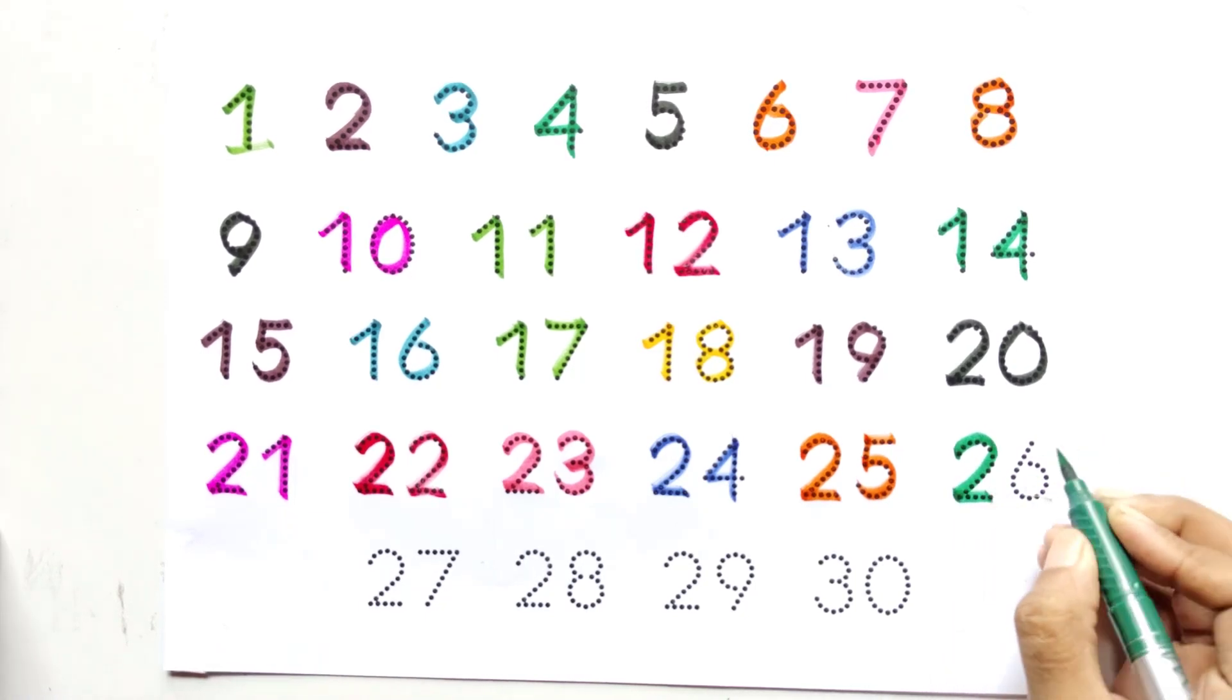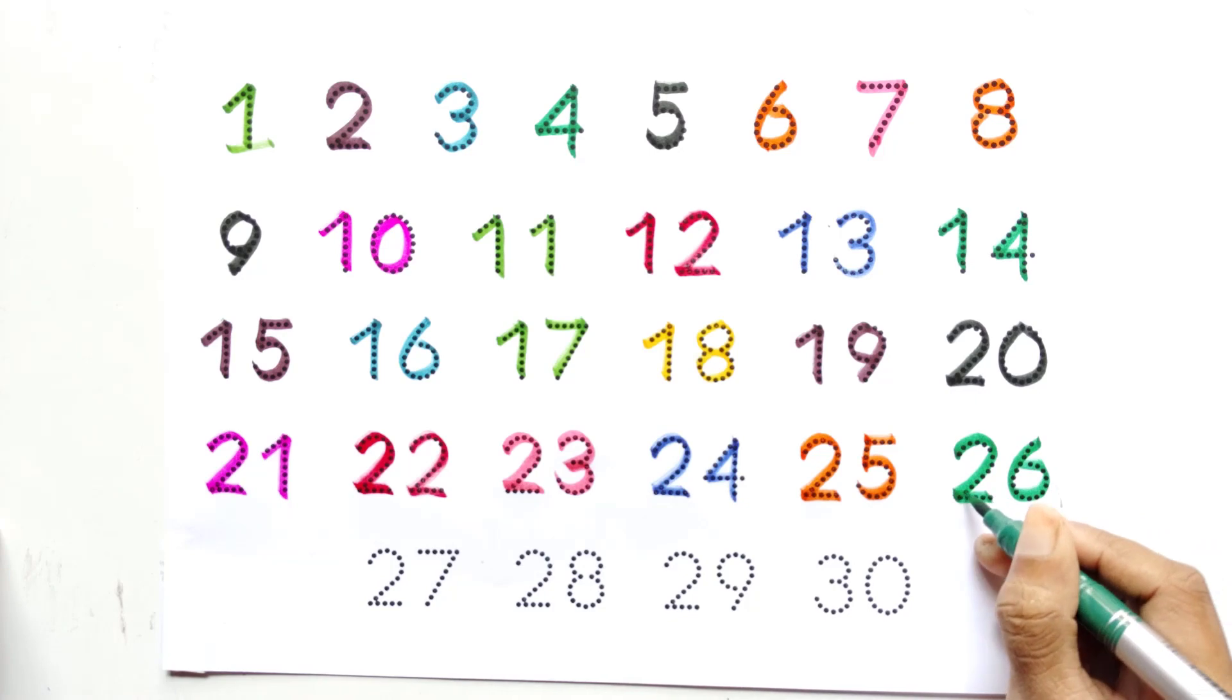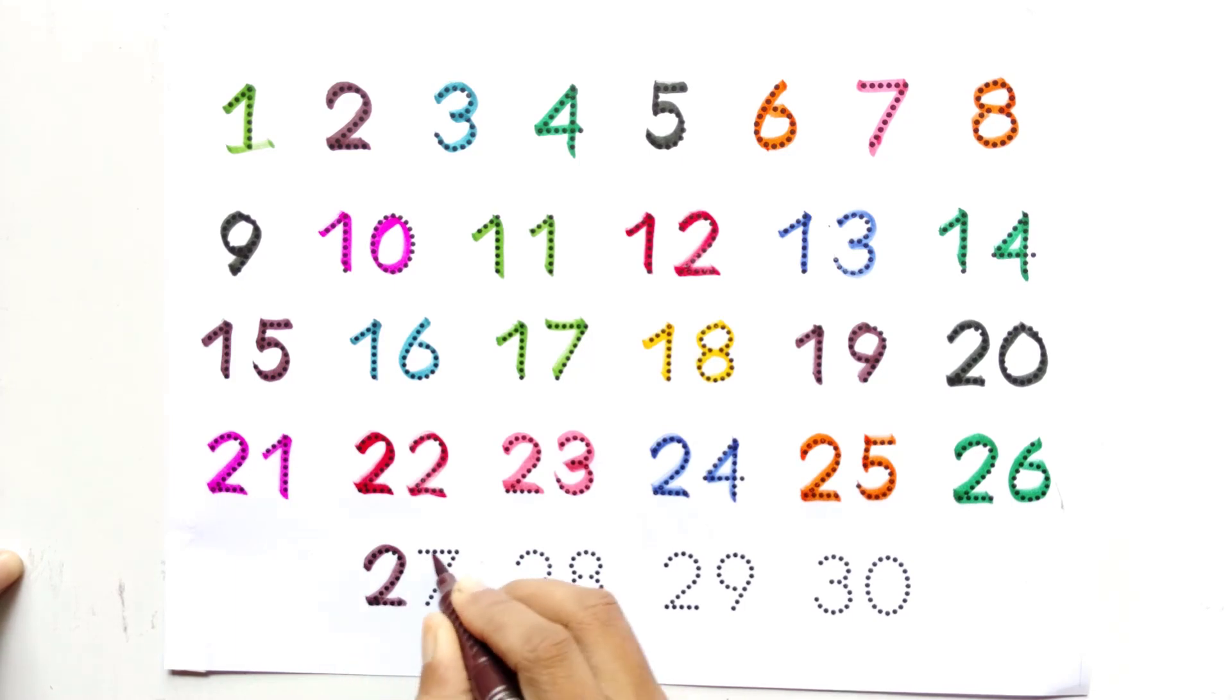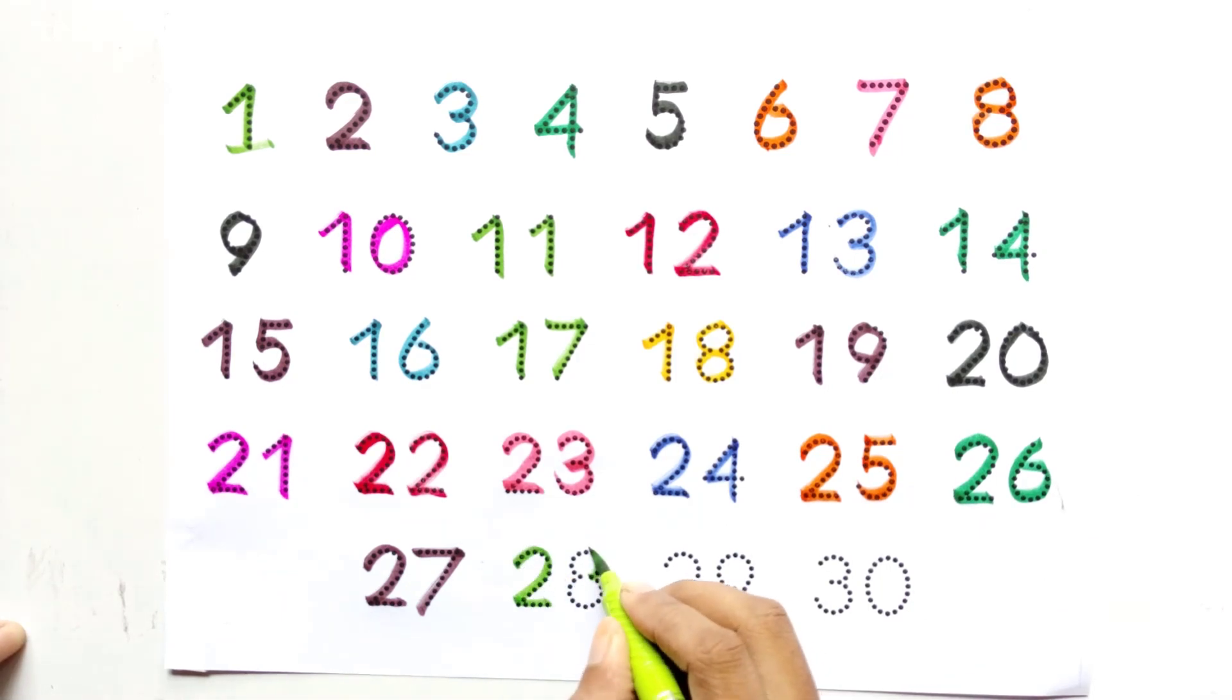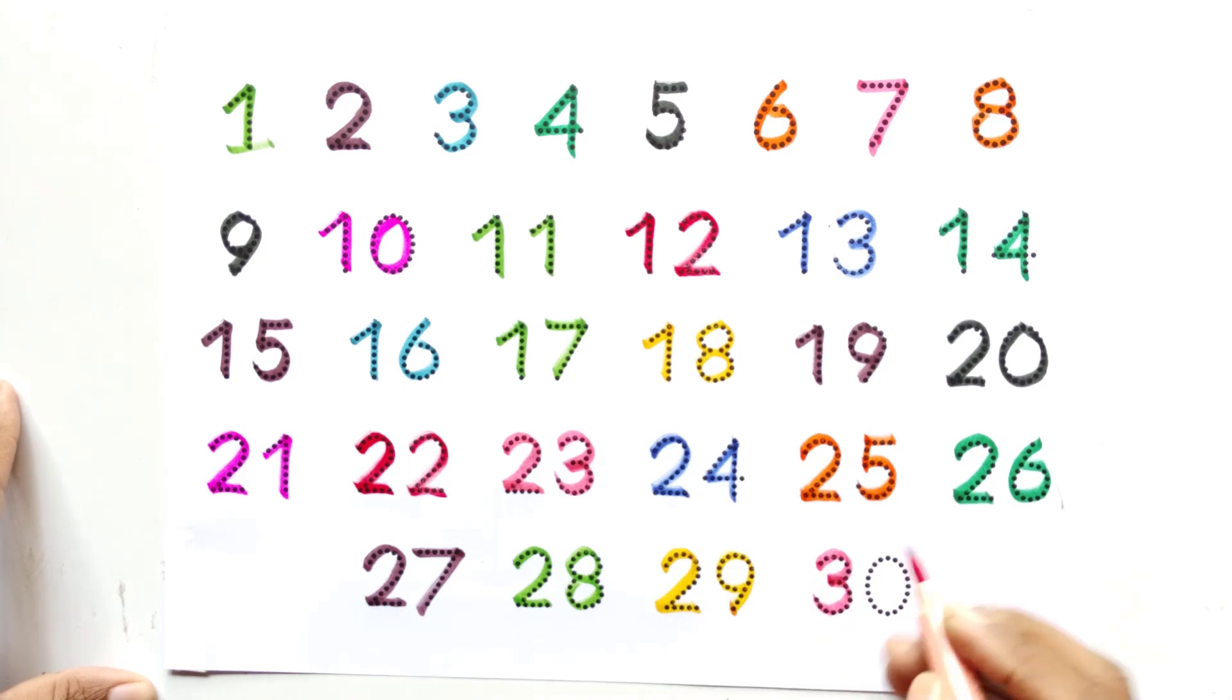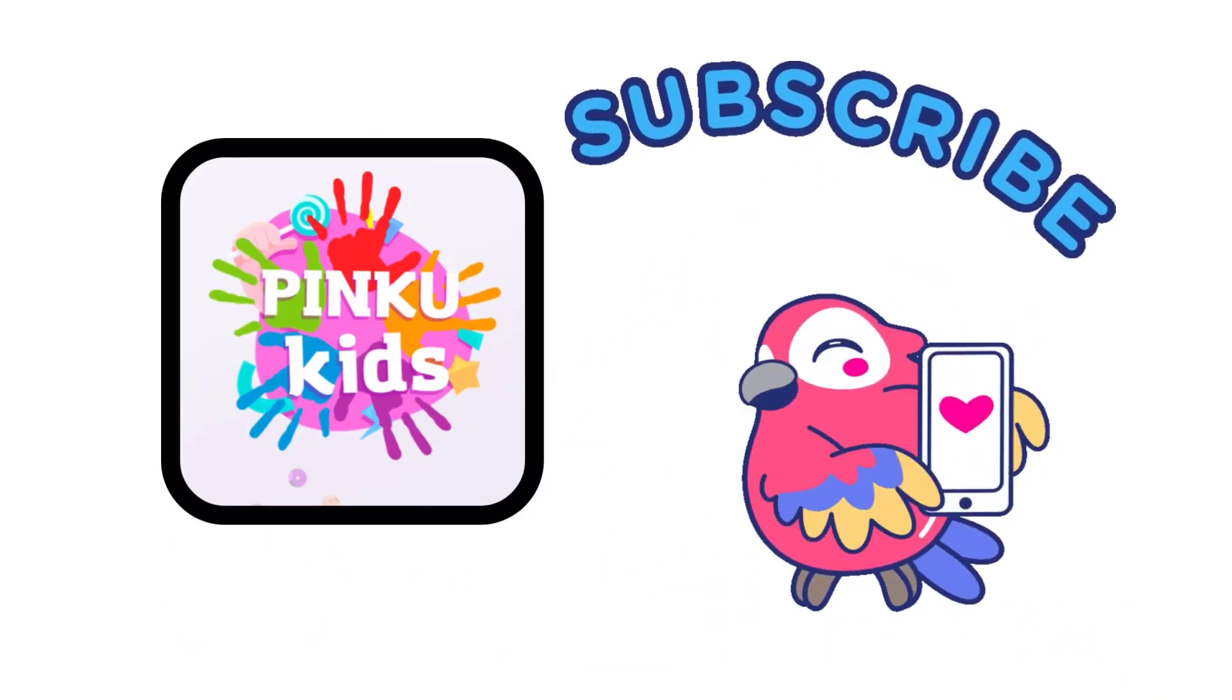Two and six, twenty-six. Two and seven, twenty-seven. Two and eight, twenty-eight. Two and nine, twenty-nine. Three and zero, thirty. Subscribe for more video.